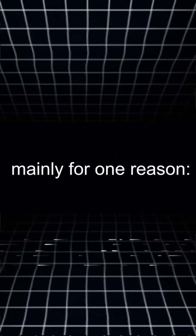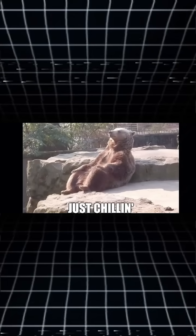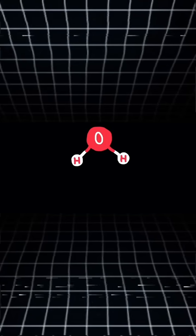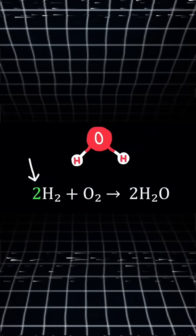They all happen mainly for one reason: to decrease energy and get to a more stable state. Chemical reactions happen in certain ratios. For example, to produce water molecules you need twice the amount of hydrogen compared to oxygen.